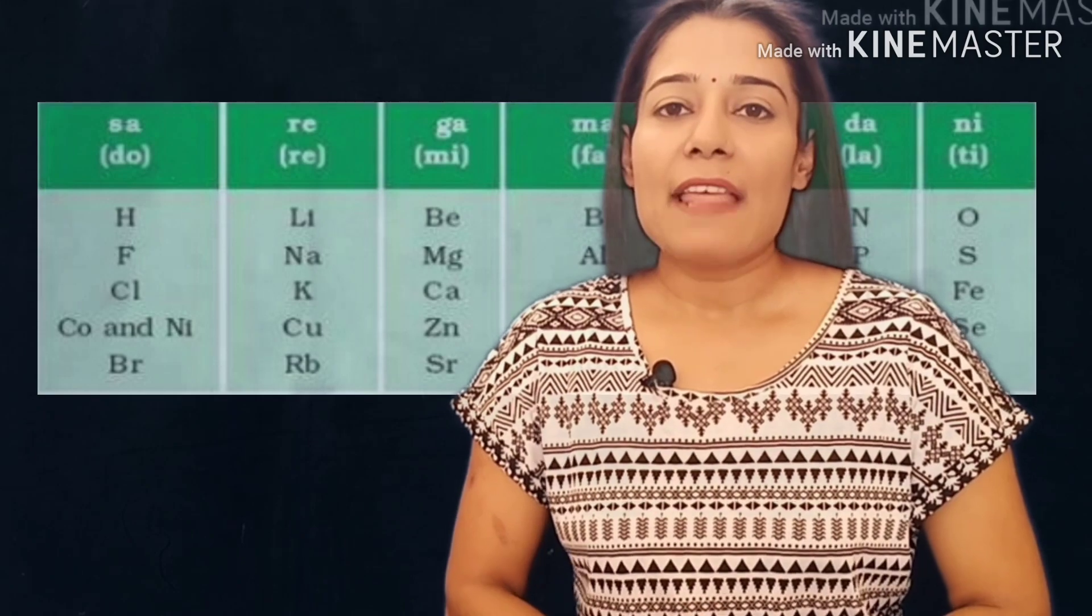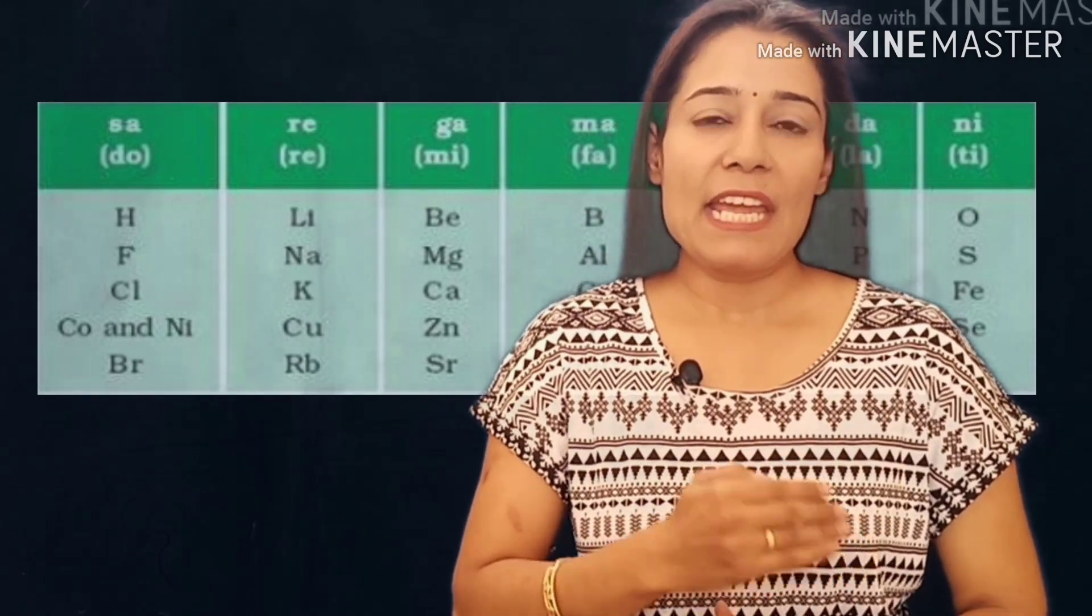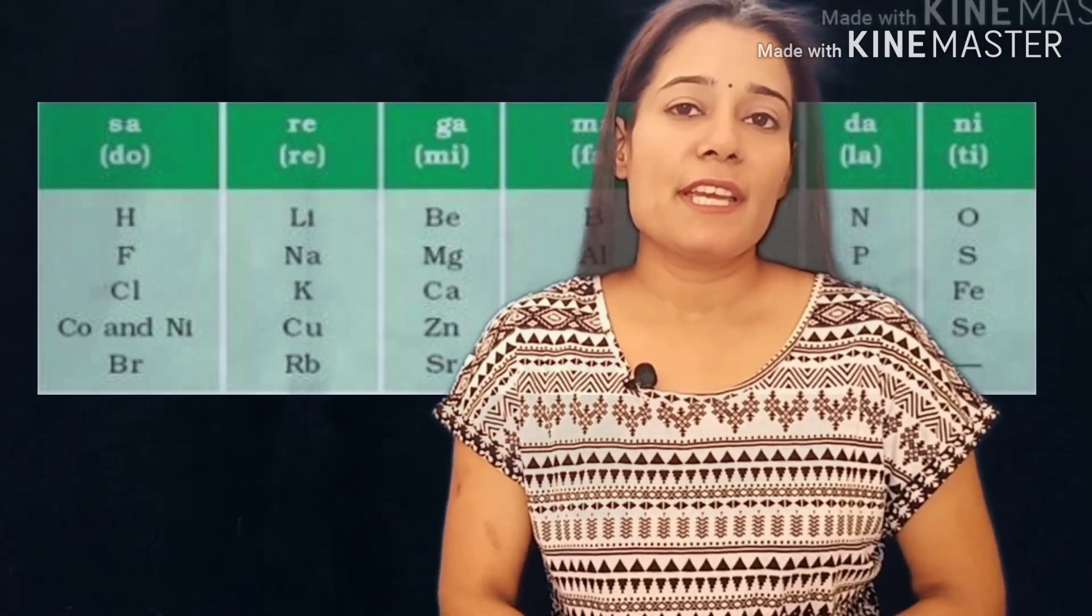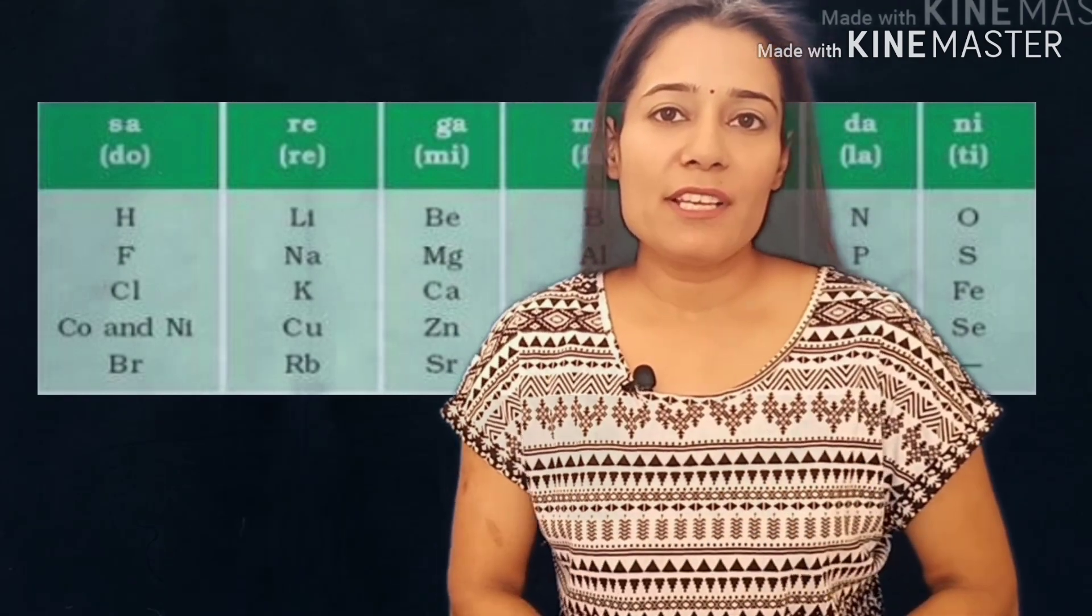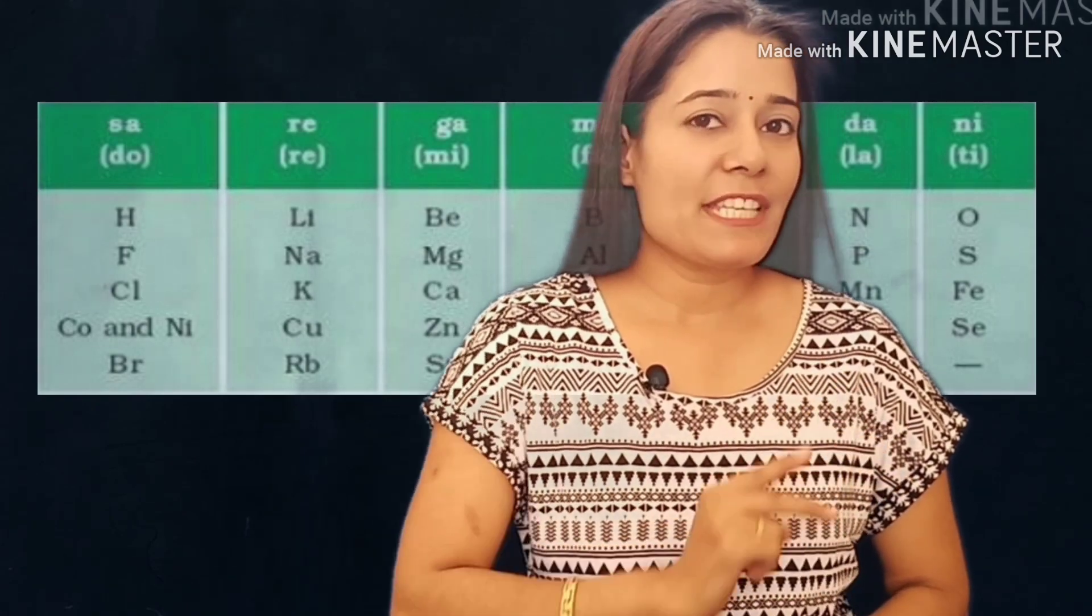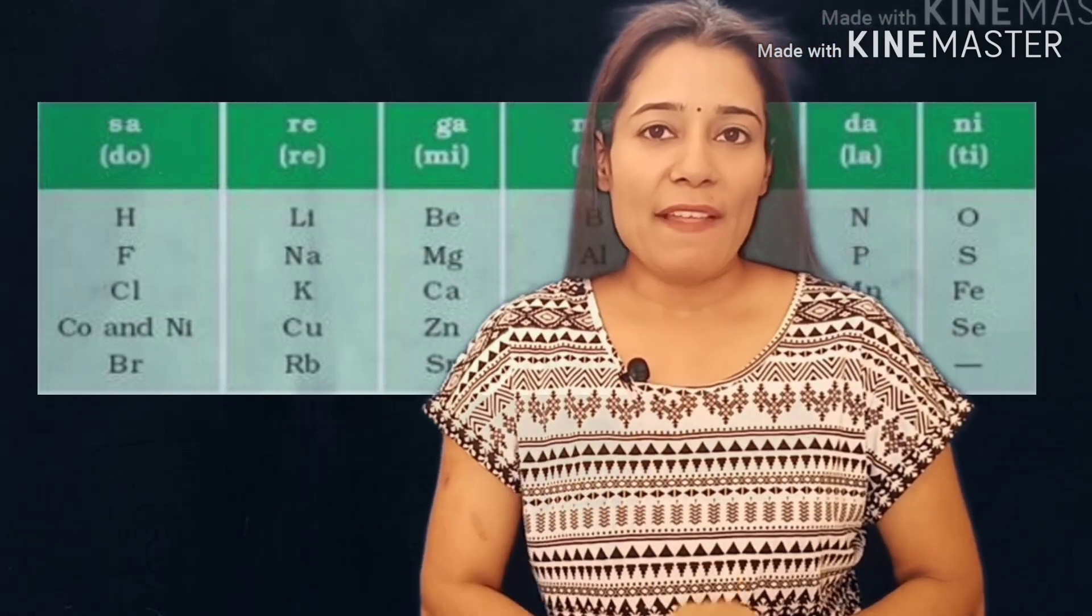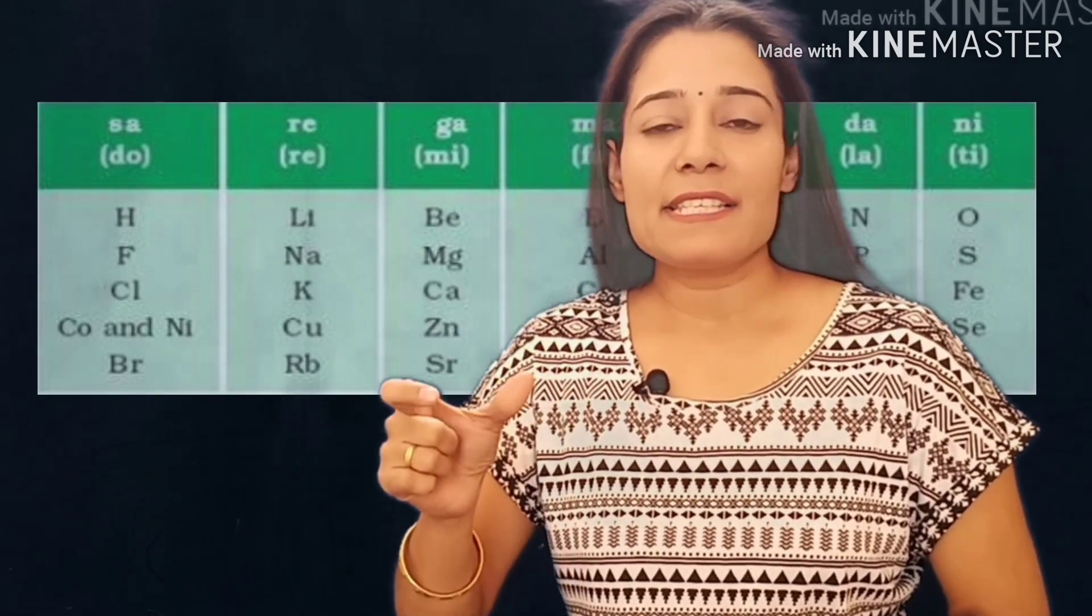But later it was found that this law was applicable to initial elements only up to calcium. One more big anomaly was also noticed in his table that in order to fit elements into his table, Newlands adjusted two elements in the same slot or position into his table. You can see that cobalt and nickel are placed together while cerium and lanthanum also are placed at the same position.